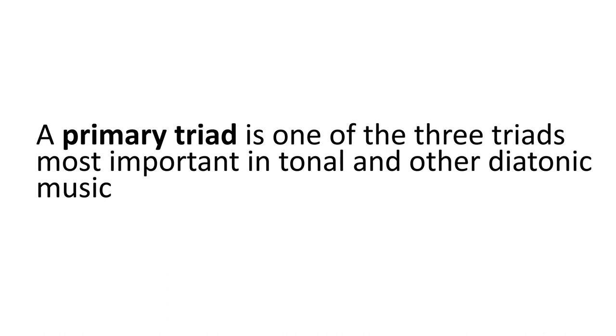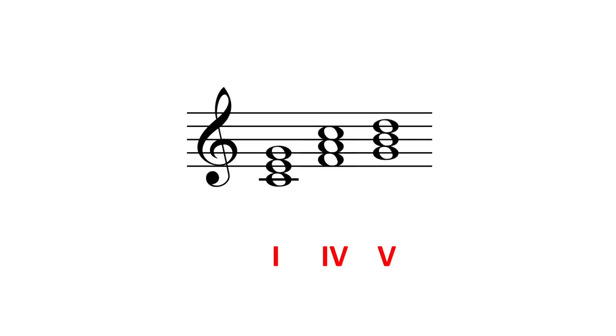So what are these three primary triads? They're one, four, and five. In C major, they would be C major (one), F major (four), and G major (five), as in this example.